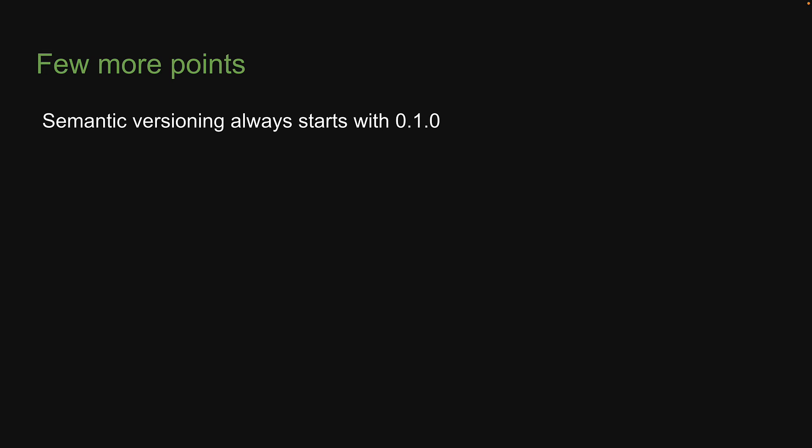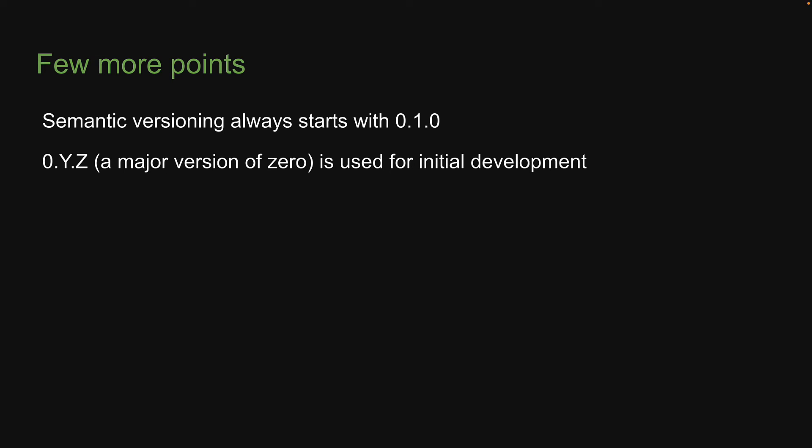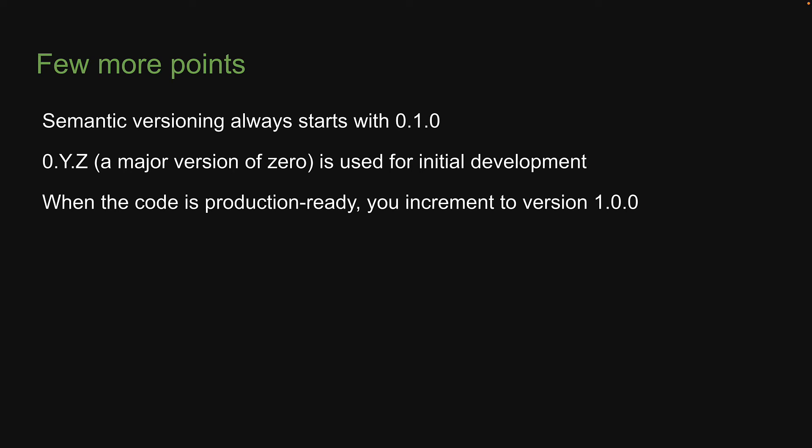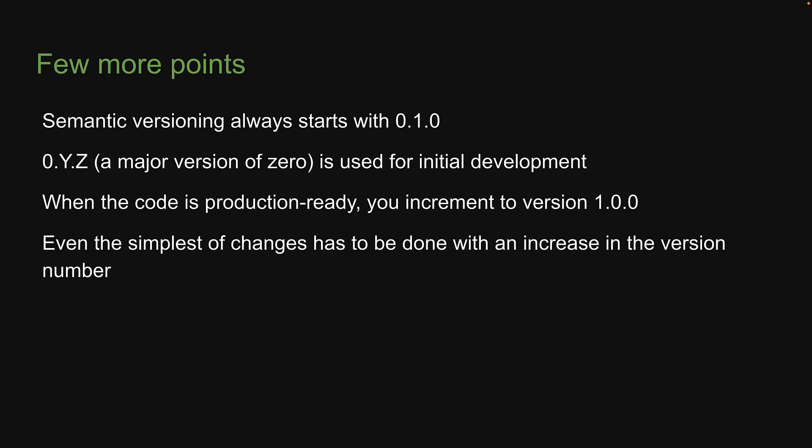Let's discuss a few more points on versioning. Semantic versioning always starts with 0.1.0, because you never start with a patch on a brand new package. A major version of 0 — that is, 0.y.z — is used for initial development. When the code is production ready, you increment to version 1.0.0. At any point in time, even the simplest of changes has to be done with an increase in the version number.